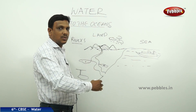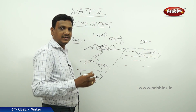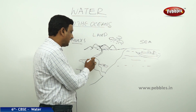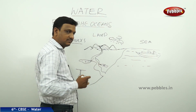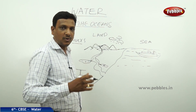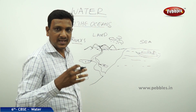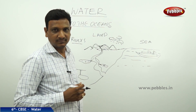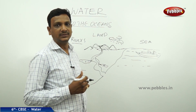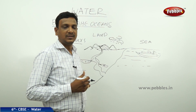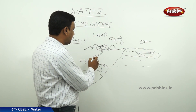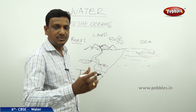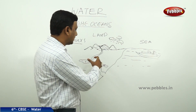The rivers carry the water for a long distance and distribute the water to ponds and lakes. The ponds and lakes are refilled by the river water. The river water is also divided into canals and distributed to many places on the land.